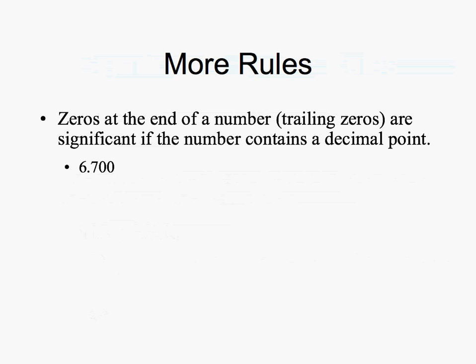Zeros at the end of a number are significant if the number contains a decimal point. The mere fact that a decimal point is located in this number indicates that these two zeros are significant — whoever is reporting the number is trying to tell us something. So these zeros are significant, and in this number we have 1, 2, 3, 4 significant figures.